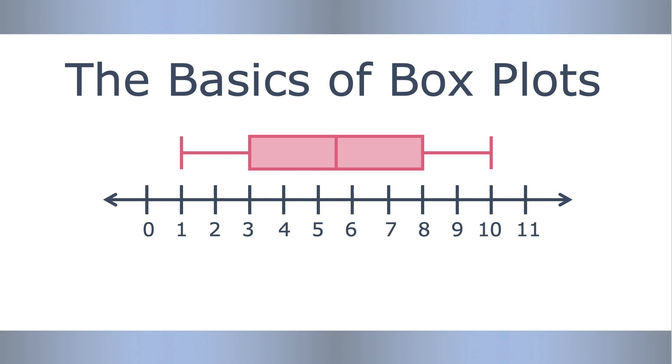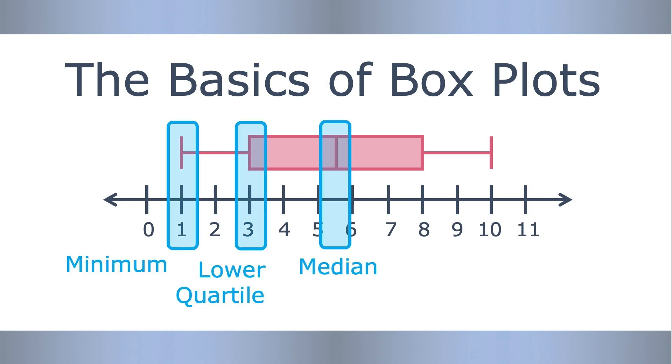It shows five important values for your data set: the minimum, the lower quartile, the median, the upper quartile, and the maximum. Let's take a closer look at each of those terms.